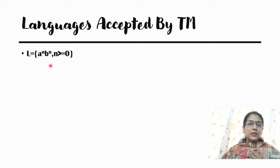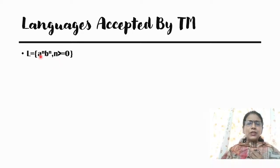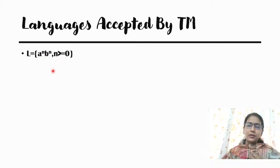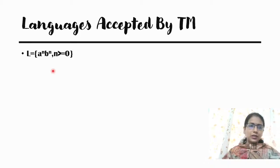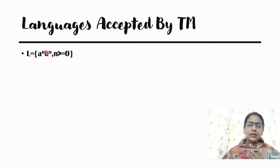The language is L = a^n b^n, n ≥ 0. What we know is that a bunch of A's is followed by a bunch of B's, and the number of A's and B's should be equal. For example, n can be 0 or n can be greater than 0.